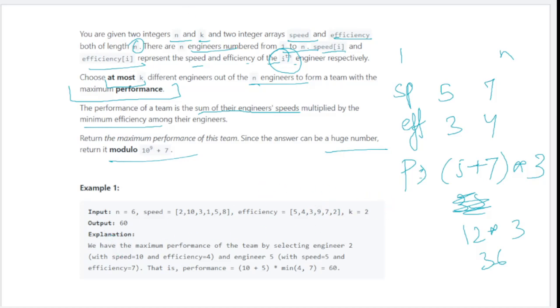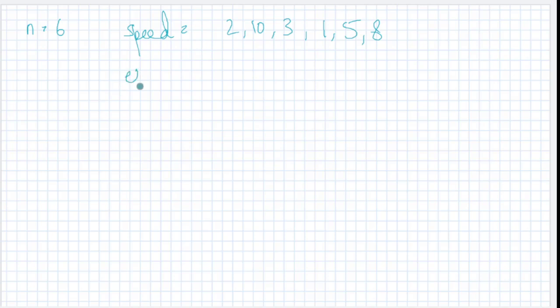Efficiency is 5, 4, 3, 9, 7, 2. Both arrays have n elements, and you have to select at most 2 engineers.